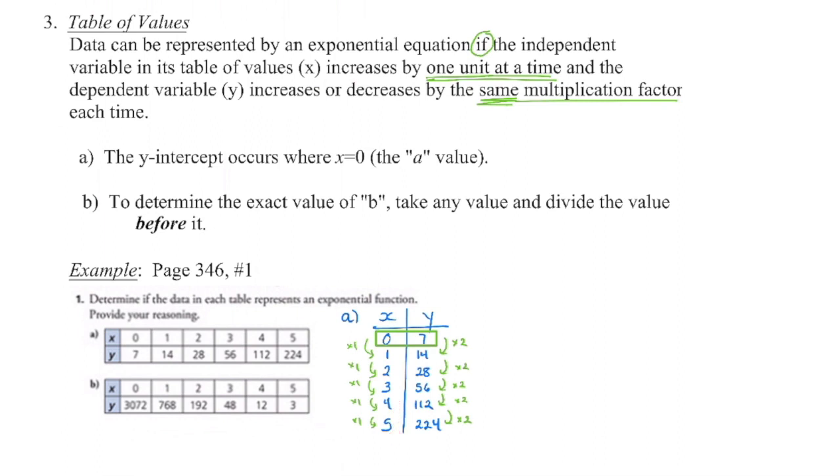And then we're going to take a look at the dependent variable. And we're going to say, what are we multiplying this by to get to my next value? And you have to check every single value to see if you're going up by a consistent amount. If there's one at the end that breaks rank and does not go up by a consistent amount, you cannot say that you have an exponential function. It has to apply to all of them. So we're going to say, okay, what are we doing with seven to get to 14? Well, we're multiplying by two. What are we doing with 14 to get to 28? We're multiplying by two.